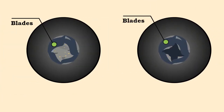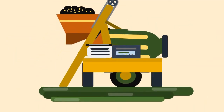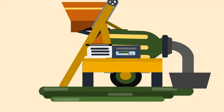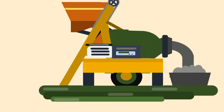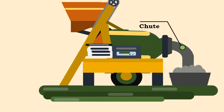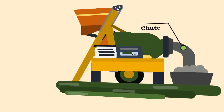Both types consist of a non-tilting cylindrical drum with blades fixed inside the drum and two circular openings at both ends. The ingredients are fed from one opening and the concrete mix is obtained from the other opening.